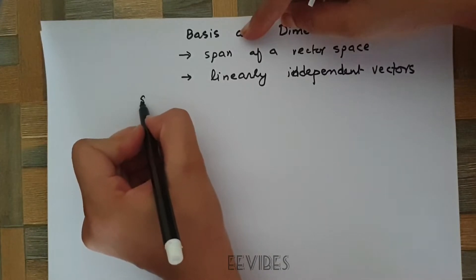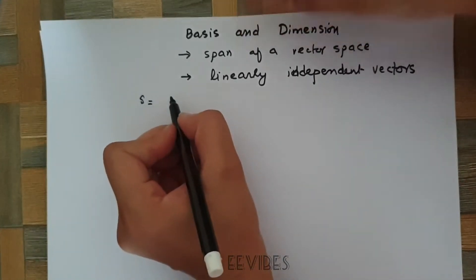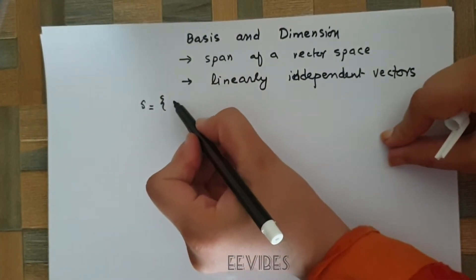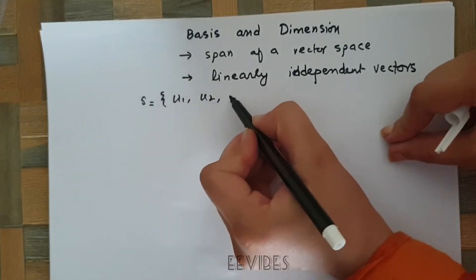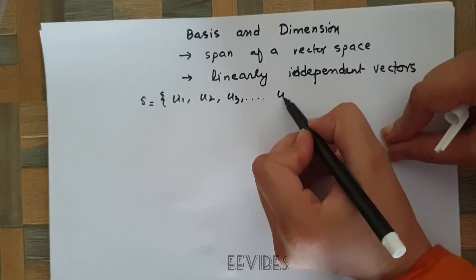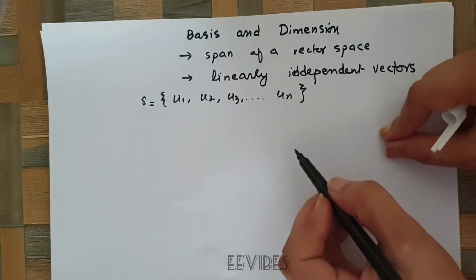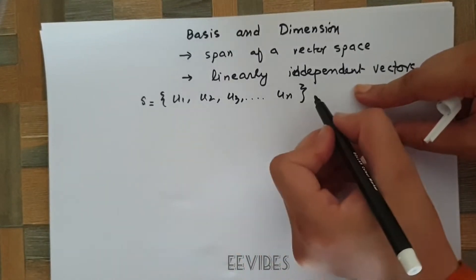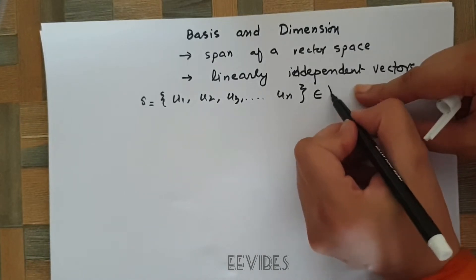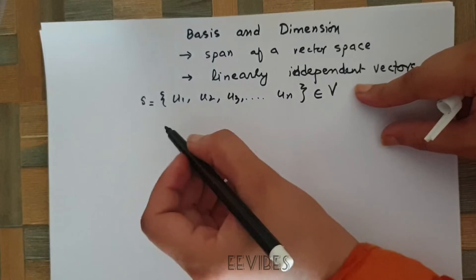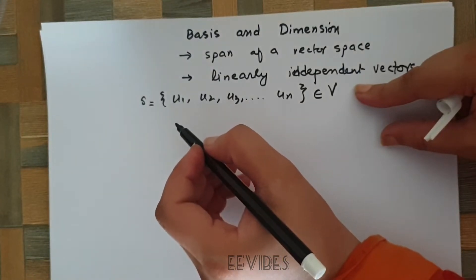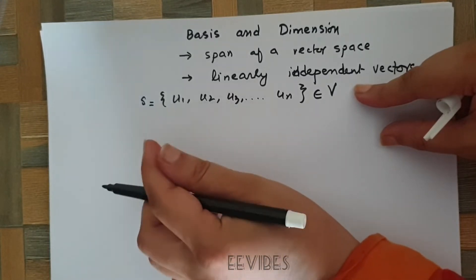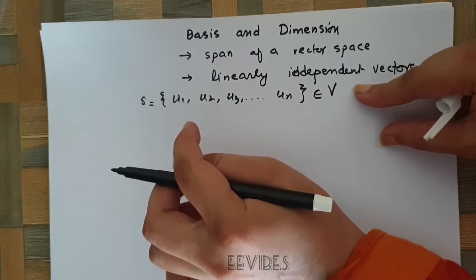Let's say a set of vectors denoted by S consists of vectors u1, u2, u3, up to un. These vectors belong to the vector space V such that S spans V, and S is linearly independent. Then we will say that the set S is called the basis for V.